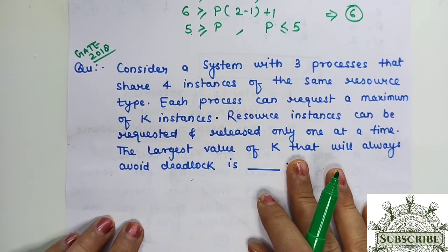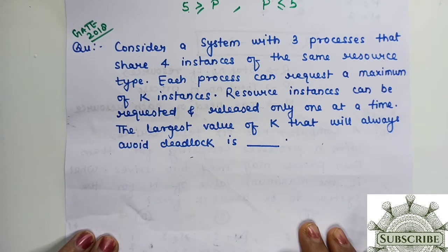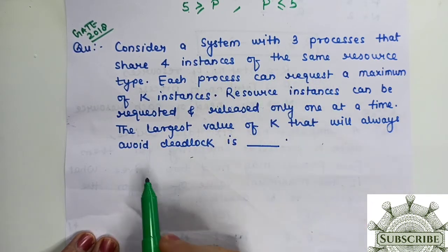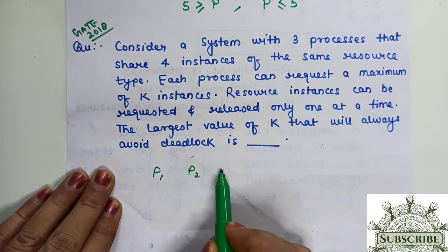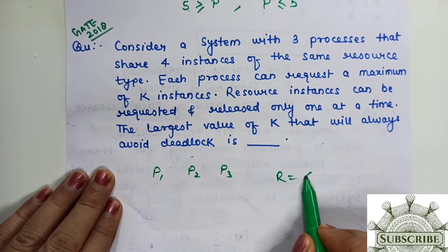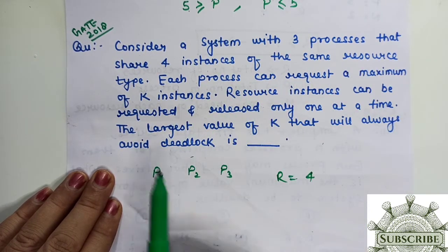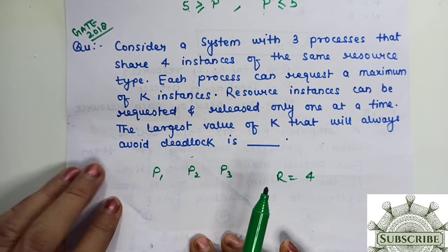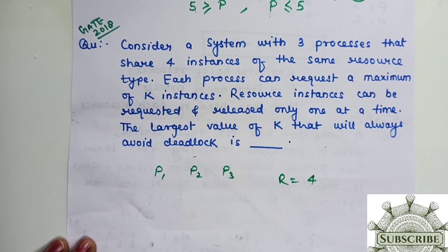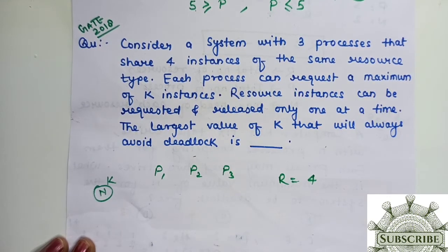Then the last question. GATE 2018, this was a numerical type question with no options given. Consider a system with 3 processes P1, P2 and P3 that share 4 instances of the same resource type. R ki value is 4. Each process can request a maximum of K instances. All requests are the same. We need to find K, meaning find N from our formula.